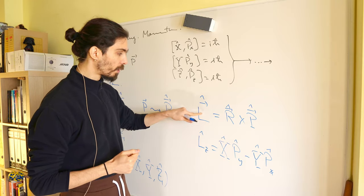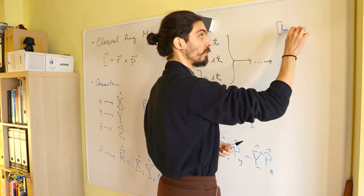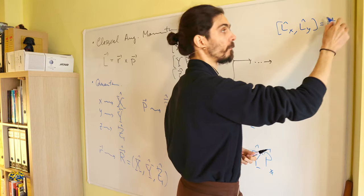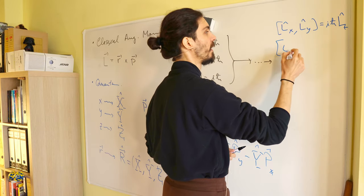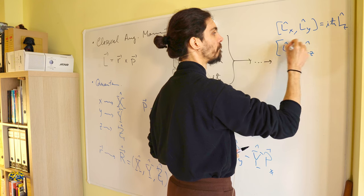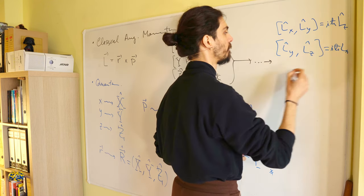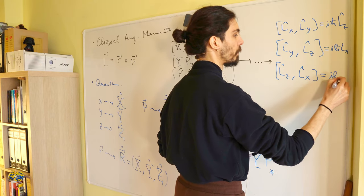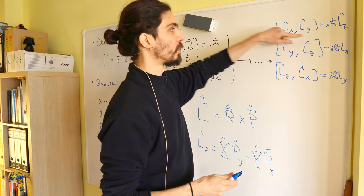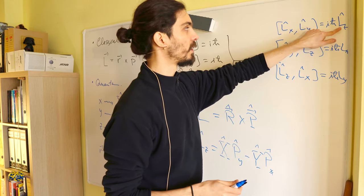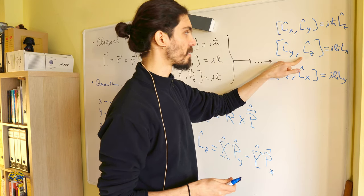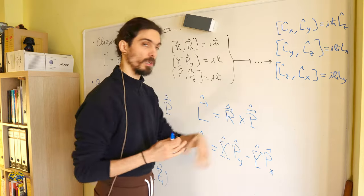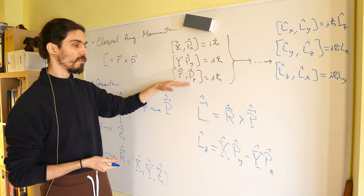The commutation relations between angular momentum components are: [Lx, Ly] = iℏ Lz, [Ly, Lz] = iℏ Lx, and [Lz, Lx] = iℏ Ly. You can see the cyclic pattern: the indices cycle through x, y, z. This is a nice way to remember these commutation relations, and all of it is a consequence of the canonical commutation relations and the definitions.